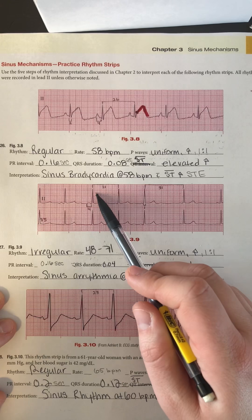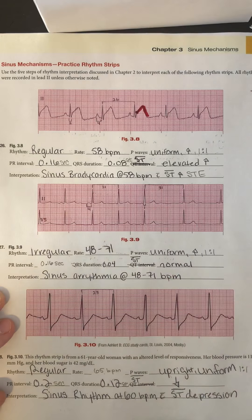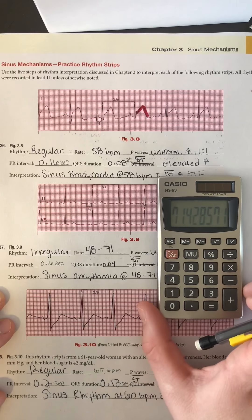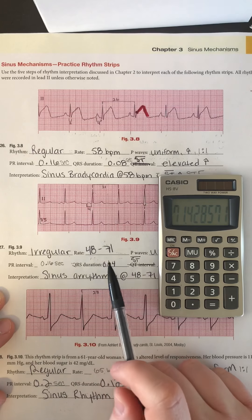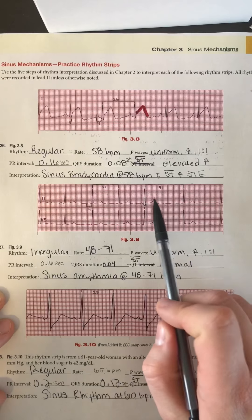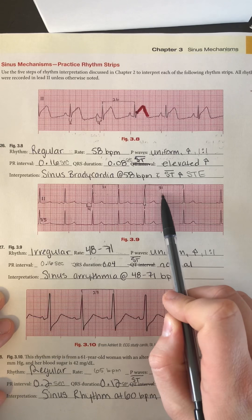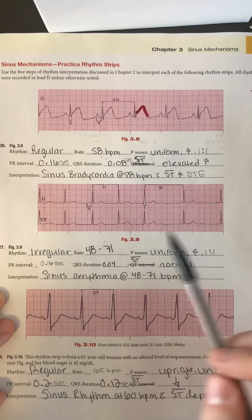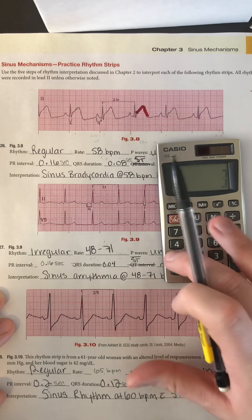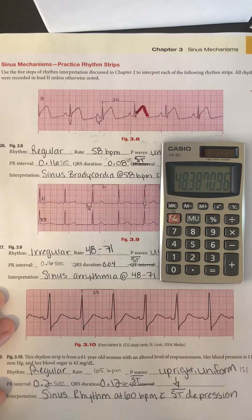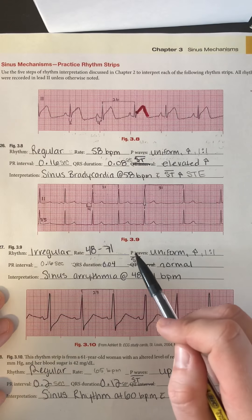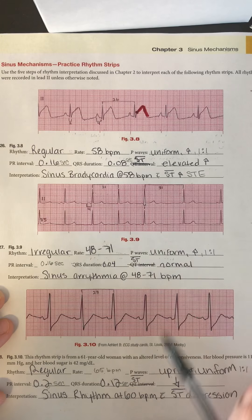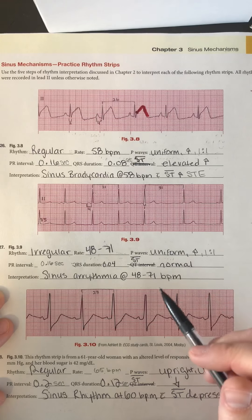I found the two closest QRS complexes, which lined up with a block: 5, 10, 15, 20, 21 — giving me 21 blocks, for a top rate of 71 beats per minute. Then for the widest interval I counted 5, 10, 15, 20, 25, 26, 27, 28, 29, 30, 31 — 1500 divided by 31 gives the low end of 48 beats per minute. Looking at the P waves, they're small but I have one P wave for every QRS complex. They are upright, all look similar, and the conduction ratio is one to one.